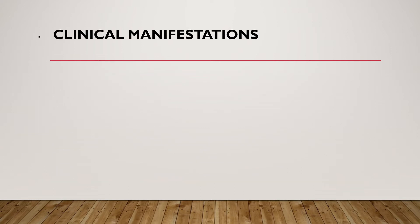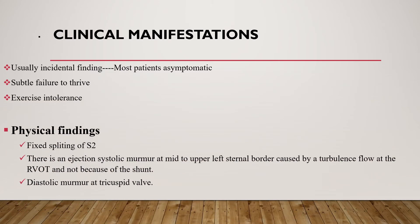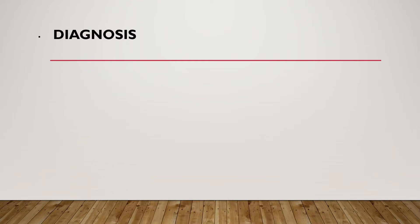The clinical manifestation of atrial septal defect is usually an incidental finding because most patients are asymptomatic, and some show failure to thrive and exercise intolerance. Physical findings include fixed splitting of S2 and an ejection systolic murmur at the mid to upper left sternal border, caused by turbulent flow at the right ventricular outflow tract — not because of the shunt itself. A diastolic murmur of the tricuspid valve can also be heard.